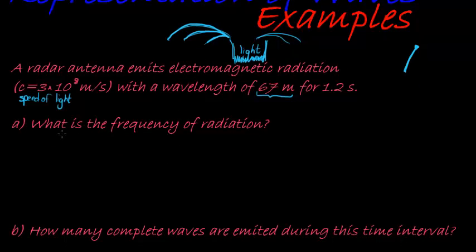So we know velocity is equal to lambda times frequency, wavelength times frequency. In this case, we have our velocity, 3 times 10 to the power of 8. You can see that's a massive number. The speed of light is incredibly fast.